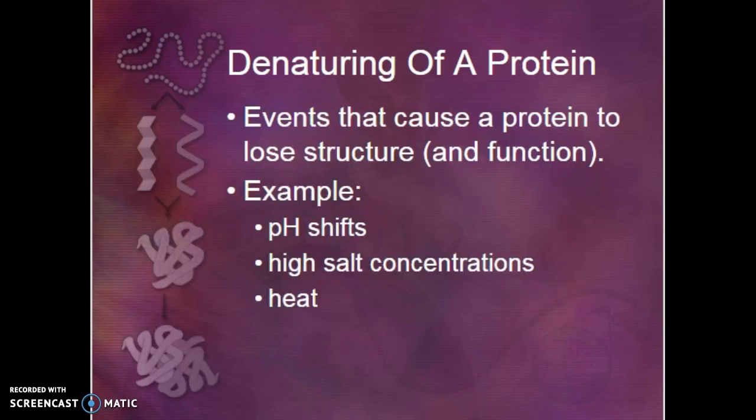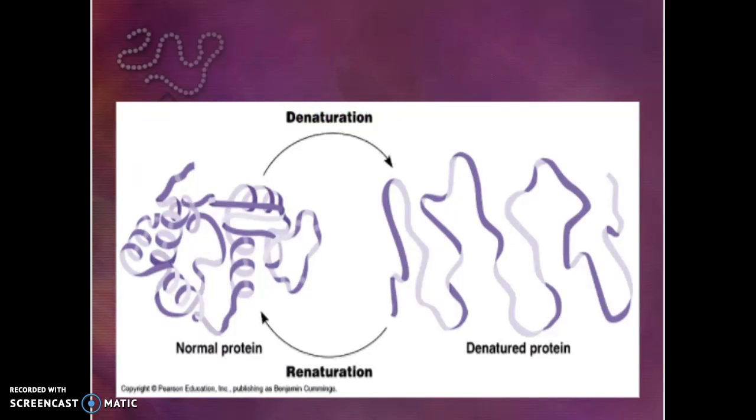Denaturing of a protein is something that is almost always on the AP exam. It's going to be anything that causes the protein to unfold. Acid can cause that. A pH shift can cause it. High salt concentrations can do it. And heat, for sure, can do it. It's one of the big reasons that it's bad to get a really high fever. Your proteins start to unfold and they don't work as well.